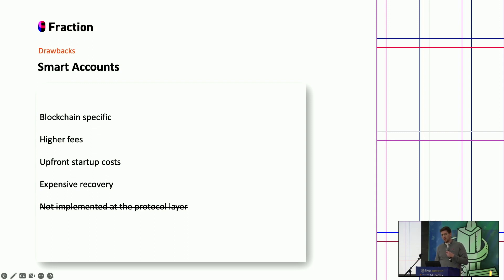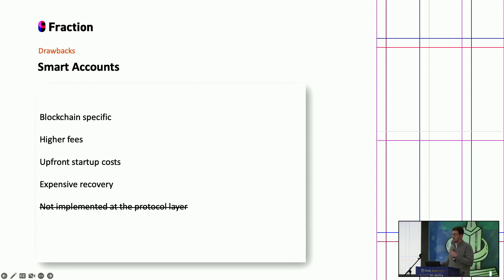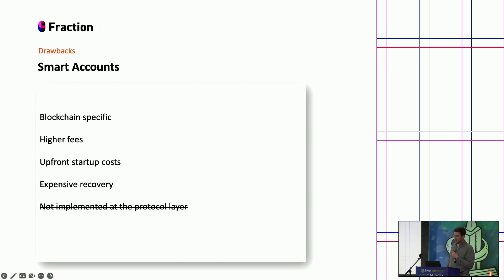Looking at drawbacks to smart accounts: they're blockchain specific. Currently we have smart accounts for Ethereum and they won't work for non-EVM compatible chains. When moving towards a multi-chain world, it's difficult to apply these technologies elsewhere as they're standardized only for EVM. Higher fees are also a current issue, though they're being addressed with L2s, ZK rollups, and other solutions. Recovery logic, while programmable, costs gas to execute. Similarly, because it's on-chain, signing for governance also requires gas on Ethereum, which tends to add up.